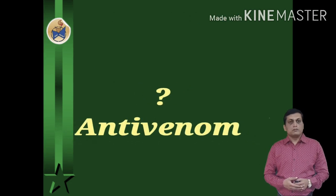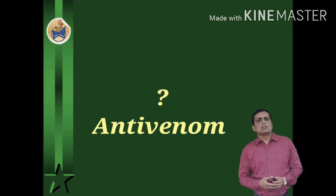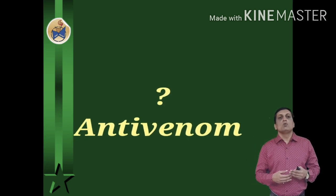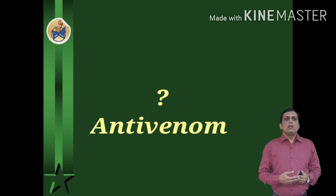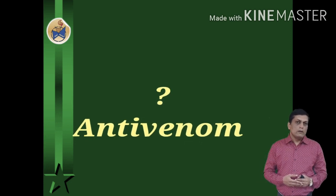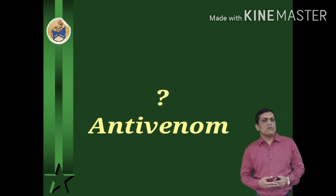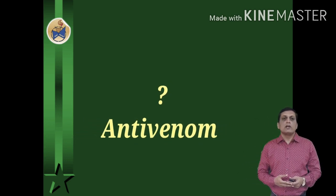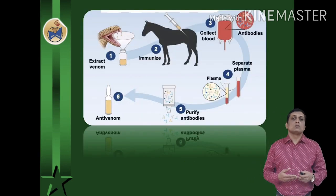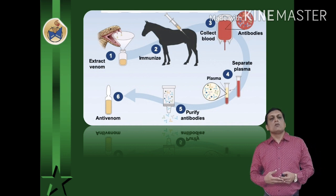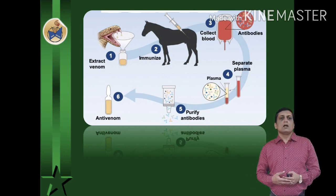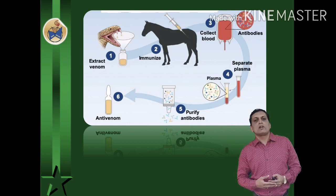Now, what is antivenom? Antivenom, also known as antivenine or venom antiserum, and also known as antivenom immunoglobulin, is a medication made from antibodies used to treat certain venomous bites and stings. Antivenom serum is injected into the body of the victim to counteract snake venom. Different antivenoms are required against different snakes. It is prepared by injecting a horse with gradually increasing doses of snake venom until the horse becomes fully immunized. Then the blood serum of the horse is collected and preserved, as it has developed antibodies to neutralize the effect of that particular snake venom.